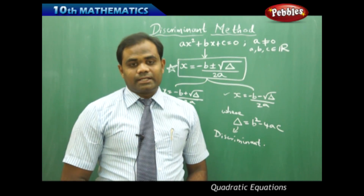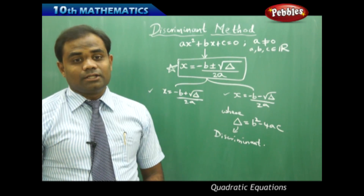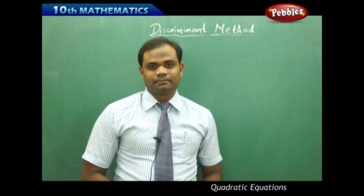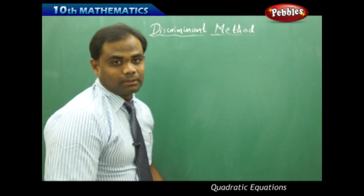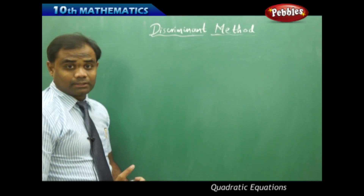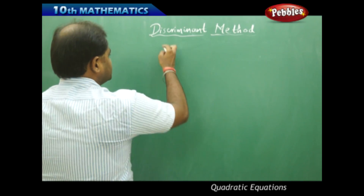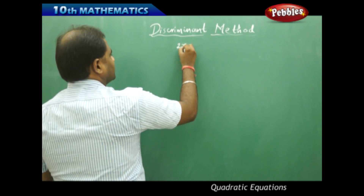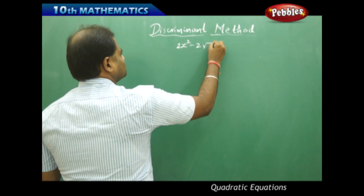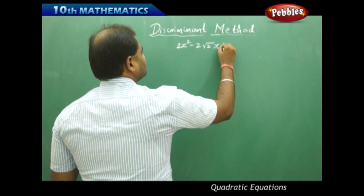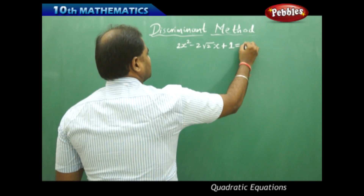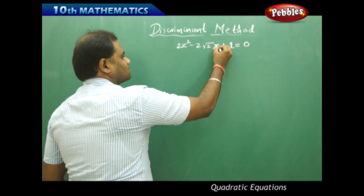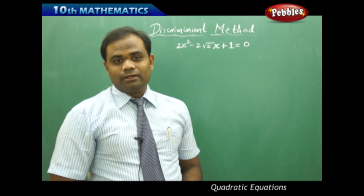Let's see an example problem where this formula can be applied to obtain the two solutions. We'll take an example problem to study the discriminant method of finding the roots. The quadratic equation is 2x squared minus 2 root 2 of x plus 1 equal to zero, and we need to find the roots of this equation.